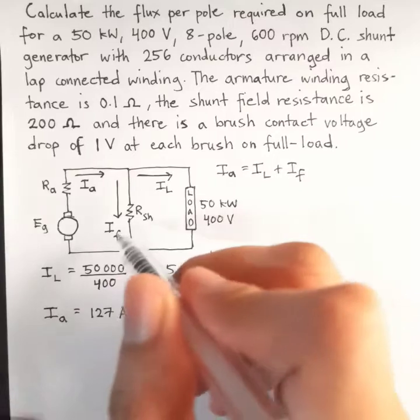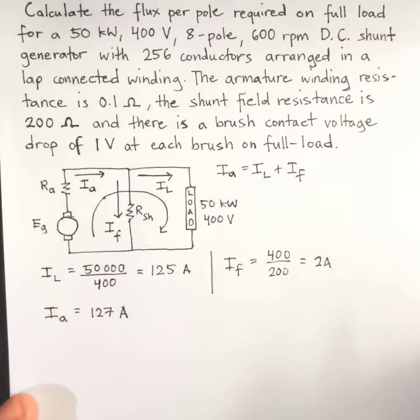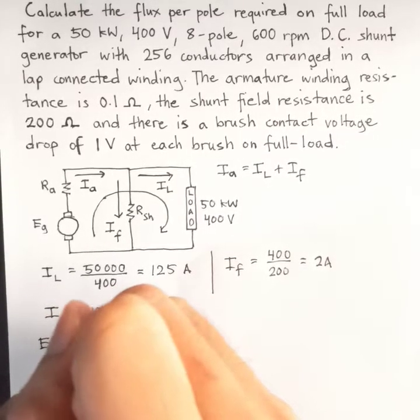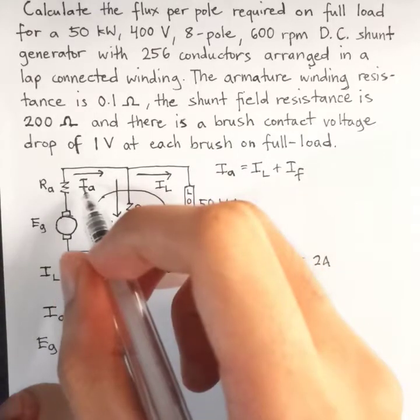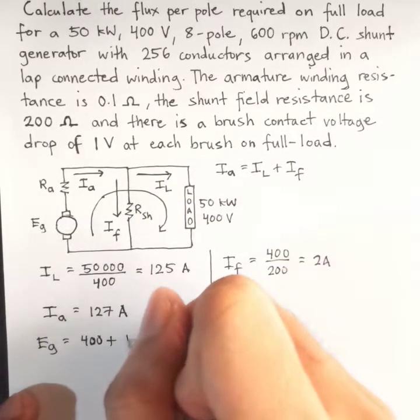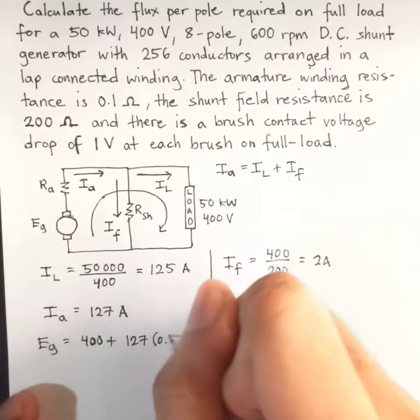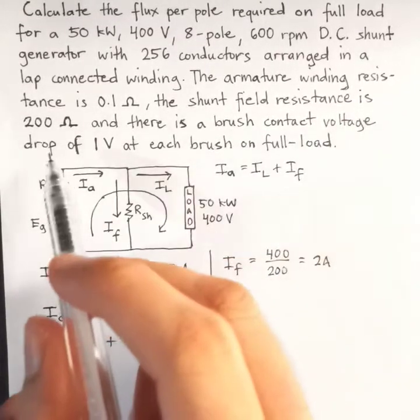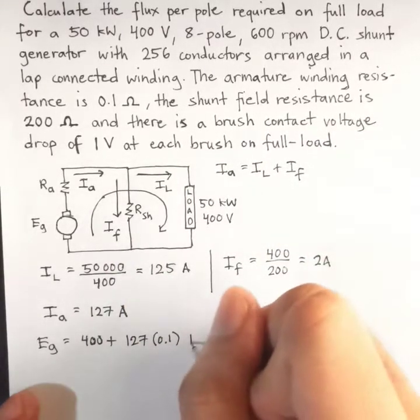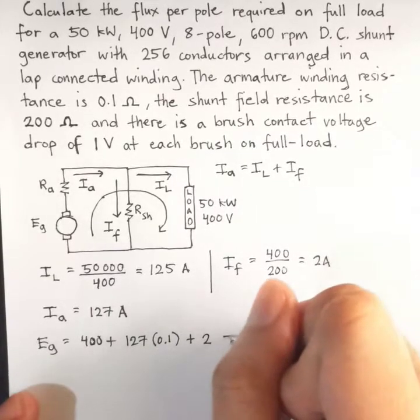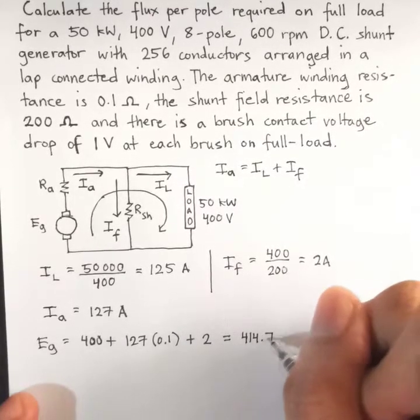By KVL, we can solve for the generated EMF, and that is EG equals 400 plus IA times RA, and that is 127 times the resistance of the armature winding, which is 0.1. And don't forget the brush contact voltage drop of 1 volt at each brush, and there are 2 brushes. Therefore, that is 2, and EG is now equal to 414.7 volts.